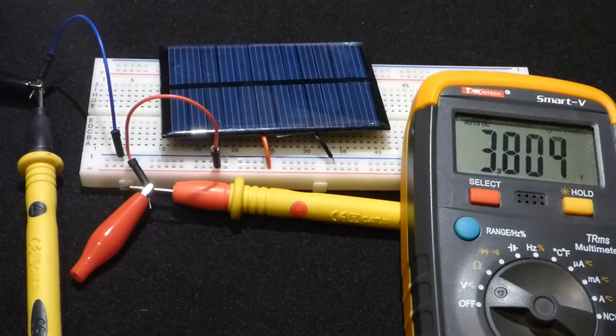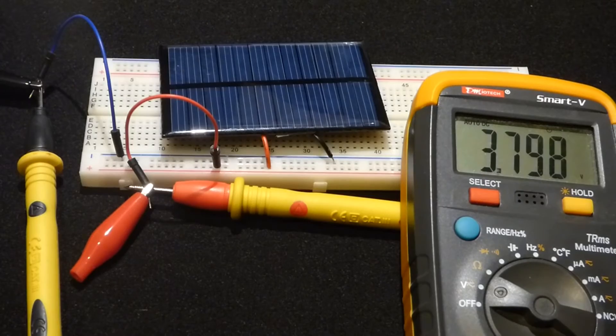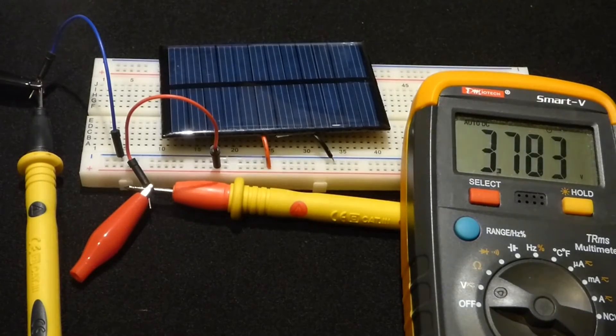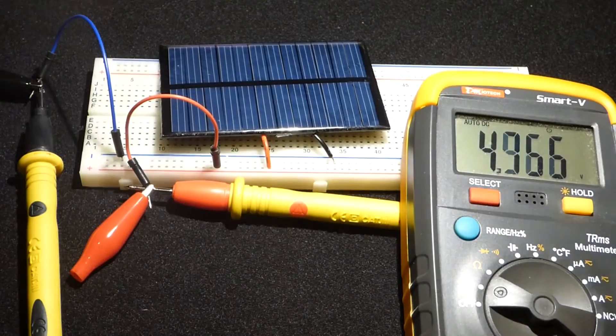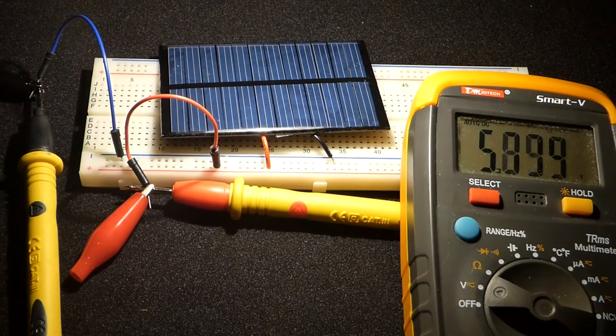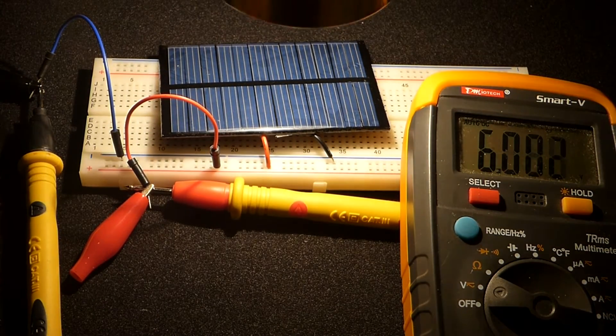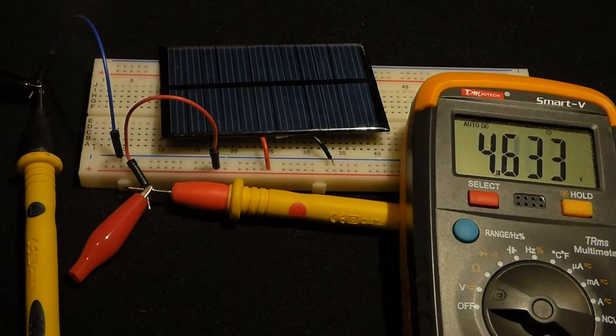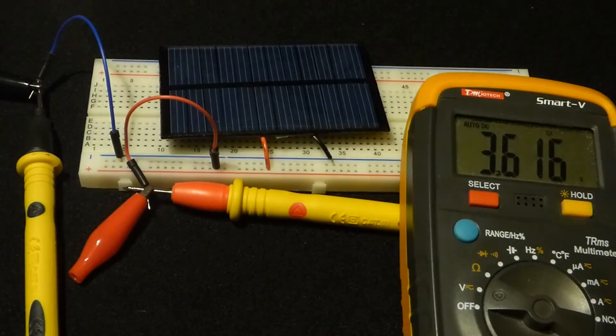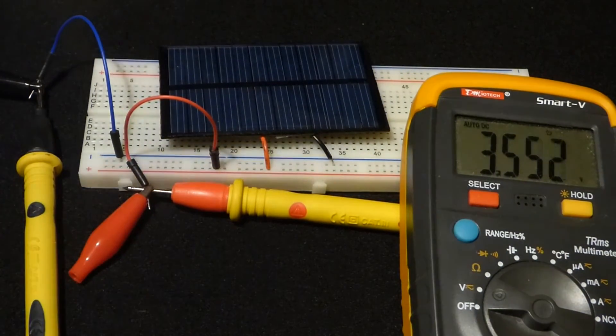And you see as the lamp gets brighter, the voltage goes up. Now I'll get the lamp right in front of it. And you see we can get up to 6 volts, even with the indoor lamp. The sunlight would be even brighter. So we definitely have 6 volts in sunlight.